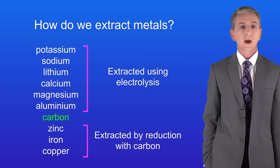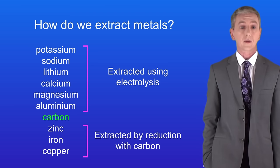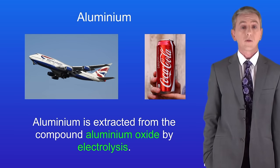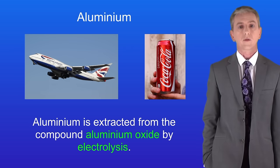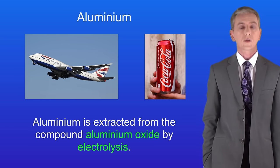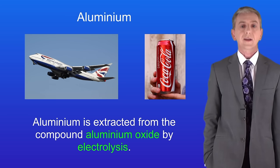So in this video we're looking at how electrolysis is used to extract metals from compounds and a good example is aluminium. Aluminium has got a very low density and it's used to make objects from drink cans to aircraft. We've got to extract aluminium from the compound aluminium oxide using electrolysis. So let's take a look at that now.